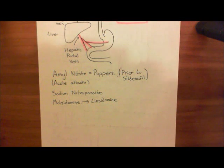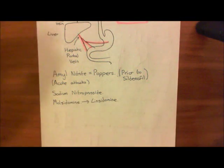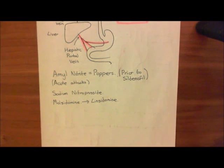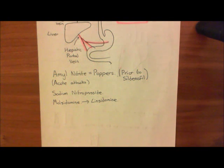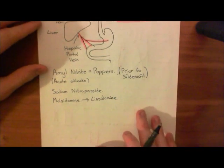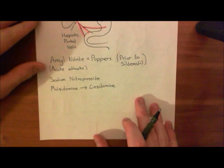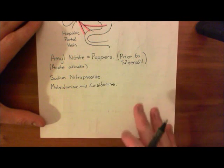Welcome to this next video in which we are talking about the mechanism by which the nitrovasodilators work to produce vasodilatation of a blood vessel. We have these examples: glycerol trinitrate, isosorbide dinitrate, amyl nitrite, sodium nitroprusside, and molsidomine.